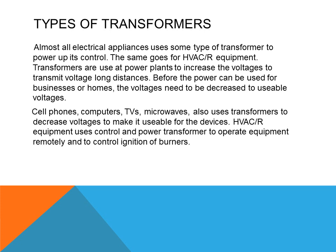There are many different types of transformers. Almost all electrical appliances use some type of transformer to power their controls, and the same goes for HVAC equipment. Transformers are used at power plants to increase voltage for long-distance transmission, then stepped back down to usable levels — around 240 volts for homes. Cell phones, computers, TVs, and microwaves also use transformers. HVAC refrigeration equipment uses control and power transformers to operate equipment remotely and to control ignition of burners, such as spark ignition systems, oil burners, or gas furnaces.